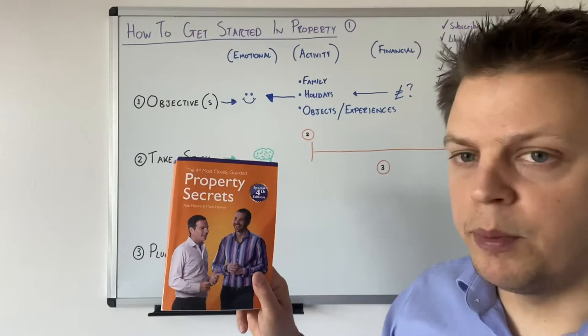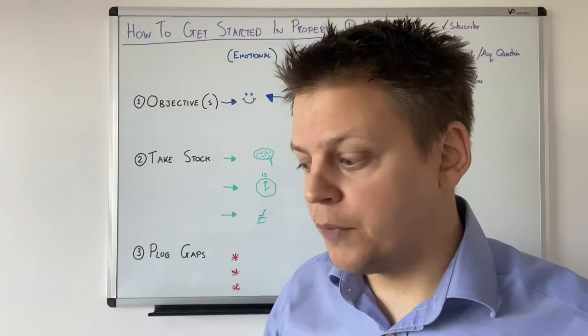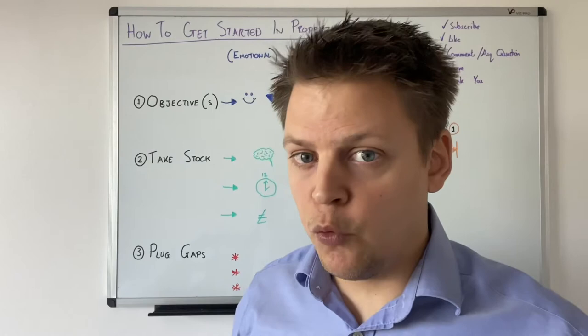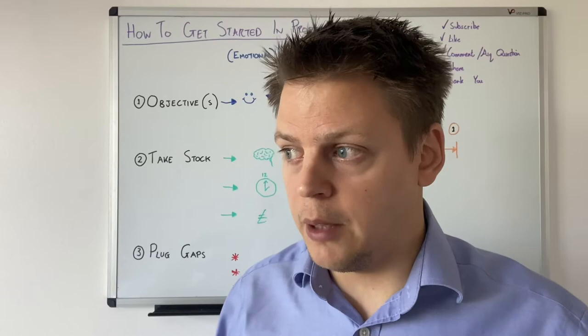The very first book I read was Rich Dad Poor Dad by Robert Kiyosaki — I've lent my copy out so I haven't got it to show you. I would recommend reading books and watching YouTube channels. Buy one book, buy it second hand, and read the entire book before you buy your next one. The danger is you can go away and buy 15 property books, and a year later those 15 books are just taking up space in your home. Buy one book, read it all the way through.